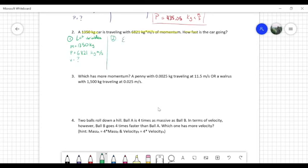Okay, so step two, write your equation. P equals m times v. Easy enough. And step number three, plug in your numbers and solve. All right, so p is 6,821 kilograms meters per second is equal to m, which is 1,350 kilograms times velocity.